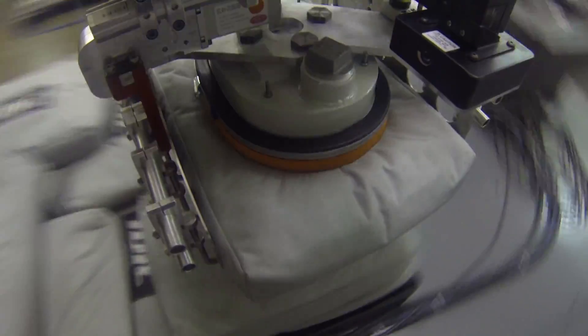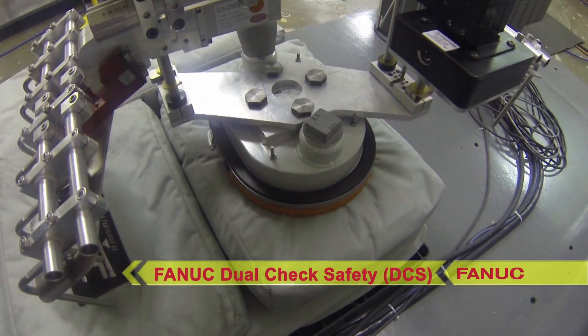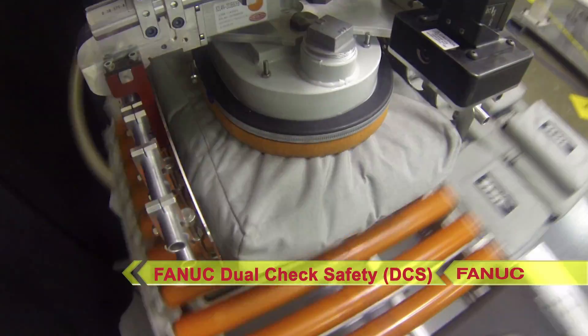In addition to vision software, the robot in this system also uses FANUC's Dual Check Safety or DCS Speed and Position Check software.